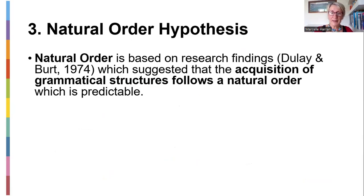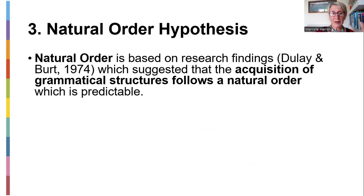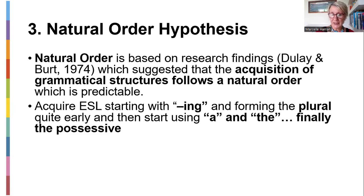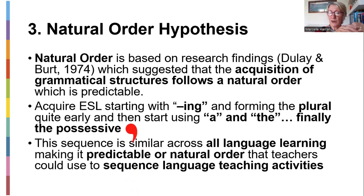Krashen's Natural Order Hypothesis: research by Dulay and Burt in 1974 suggested acquisition of grammatical structures follows a predictable natural order. If I'm learning English as a second language, I start with '-ing,' then plurals, then article use, and finally the possessive. The possessive — use of the apostrophe — is again the trickiest. The sequence is similar across all language learners and is predictable.